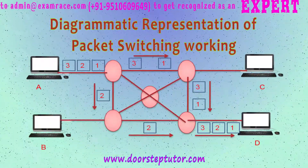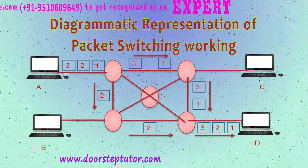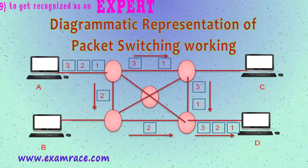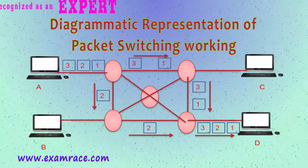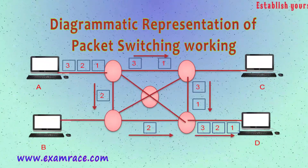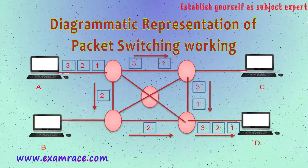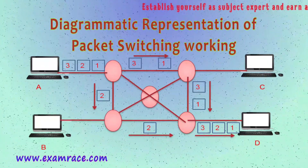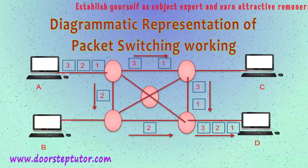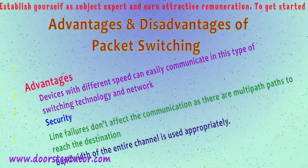Looking at a diagram to understand the working: we have four workstations A, B, C, and D. A and B are on the sender side; C and D are on the receiver side. The message is divided into three packets — one, two, and three. There are various routes to reach destination D. Packets one and three move through one route, while packet two goes through another route. At the destination, they get arranged in proper sequence.